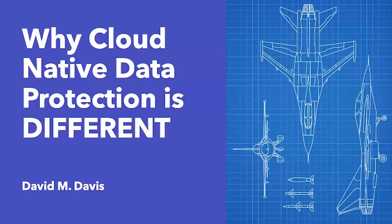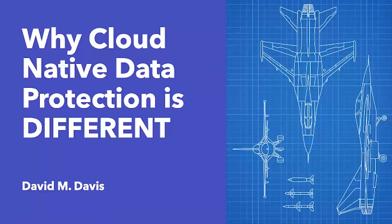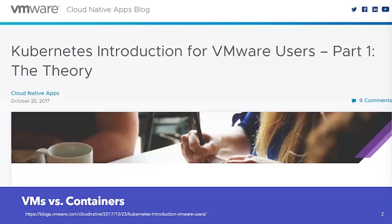Many of us are excited about the possibilities that cloud native applications can provide — more scalability, more agility, more availability. That's what Gmail runs on, that's what Netflix runs on. At the same time, if implemented incorrectly or without proper understanding of the ecosystem tools, cloud native applications could be a huge failure. Understanding why protecting cloud native apps is different from protecting traditional applications is critical.